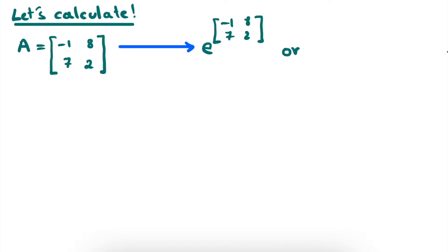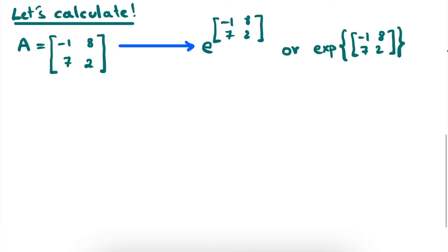Alternatively, you might see this written in the following way: simply exp or exponent, open a curly bracket, then write your matrix — so minus 1, 8, 7, and 2 — close the matrix and close the curly bracket. This latter notation is of course to avoid writing the entire matrix as a superscript in the exponent. So let's now see how we actually calculate this thing.